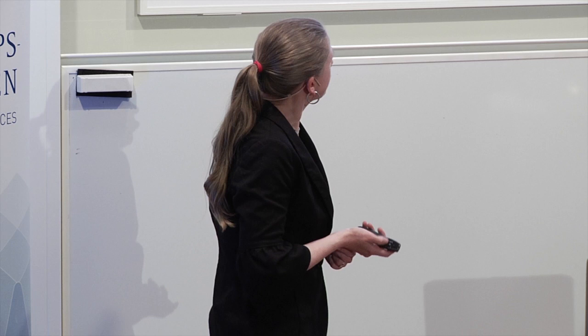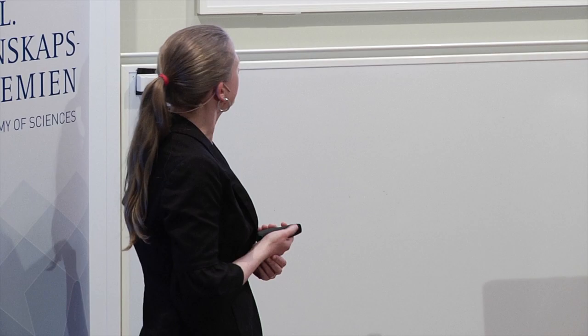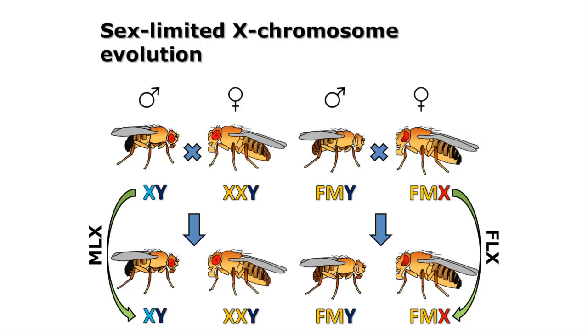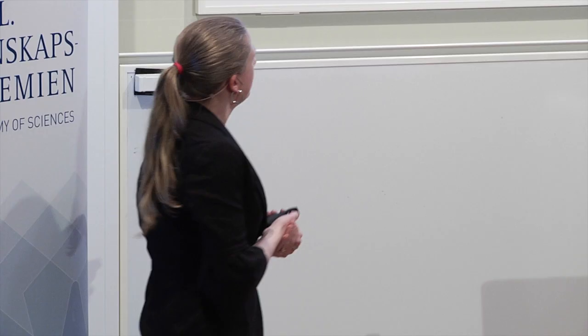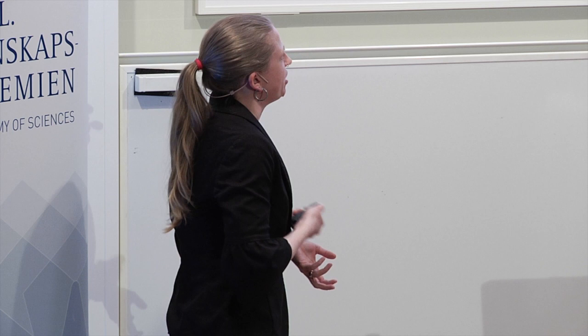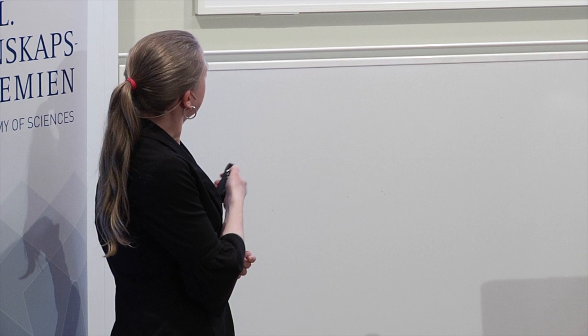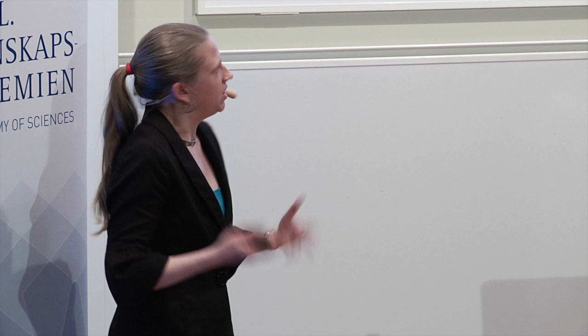We did two main experiments. The first is sex-limited X chromosome evolution. Because Drosophila has interesting genetic constructs, you can force the X to go either from father to son or from mother to daughter generation after generation, never being expressed in the other sex. Some of these flies look a little different because we use markers to tell which individuals have which combination of chromosomes. In the male-selected lines we would expect the X to be enriched for male-benefit alleles, and in the female-limited lines the X should start fixing female-benefit alleles.